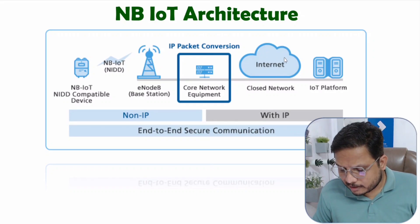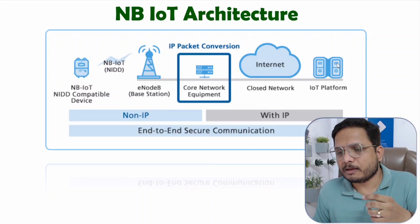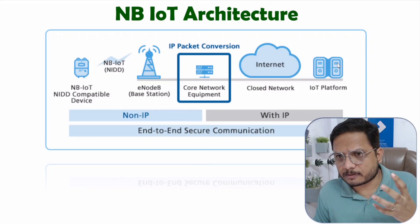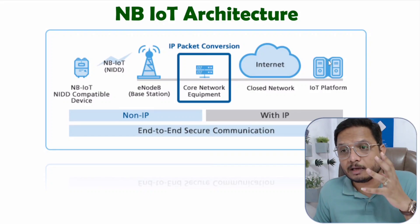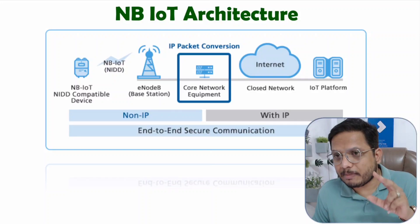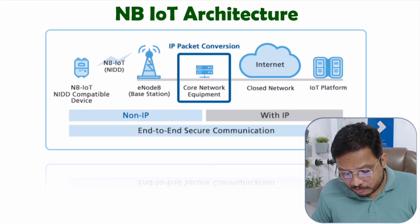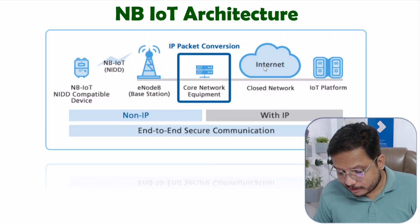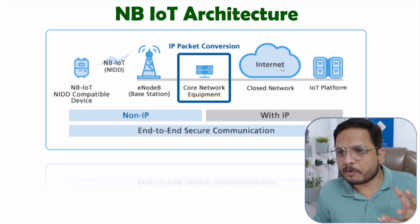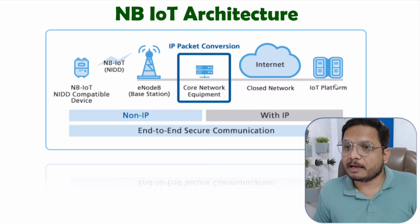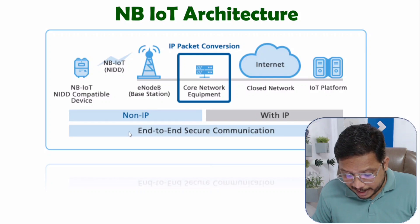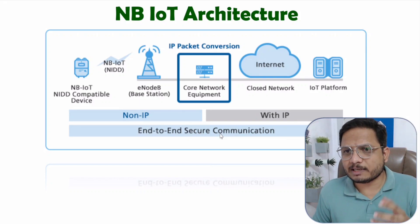On the internet, IoT platforms utilize the data to develop many applications that can be used by end users. So in NB-IoT architecture: device-to-base-station is non-IP communication; base-station-to-core-network forwards data to the internet; from the internet onward, communication is IP-based. The entire application is end-to-end secured.